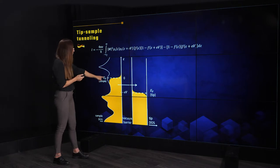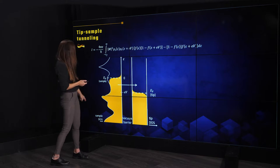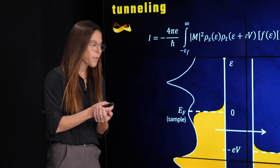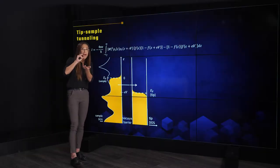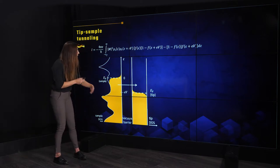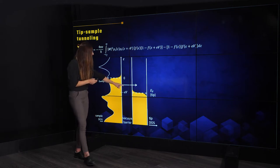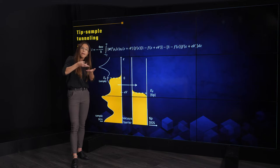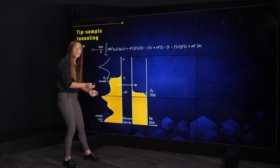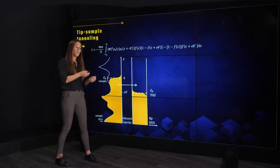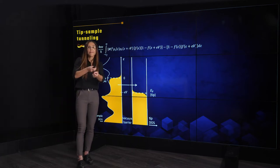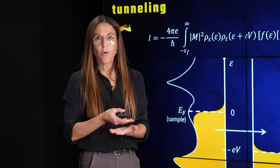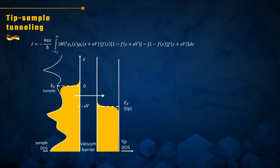Here is an illustration representing the tunneling junction between the tip and the sample. On the left we see the density of states of the sample as a function of energy — this is what we want to measure and explore. In the middle we see the vacuum barrier representing the vacuum distance between the tip and the sample. On the right we have the density of states of the tip as a function of energy, and we see that it is relatively constant, because we pick tip materials whose density of states is constant in the energy region of interest. This helps us to deconvolute the tip's contribution from the tunneling current and retain only information about the density of states of the sample.